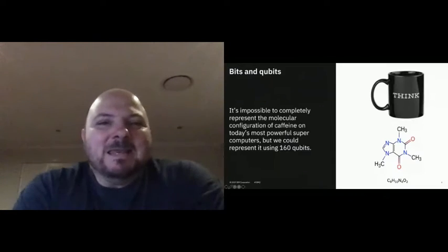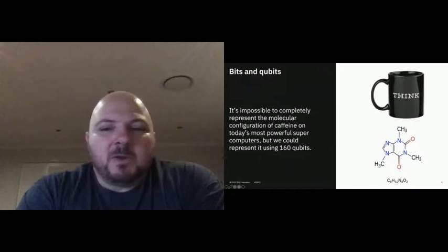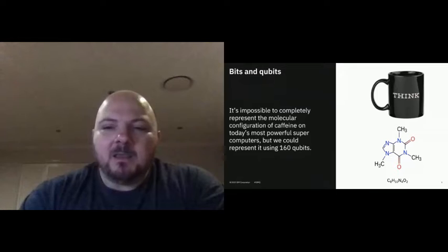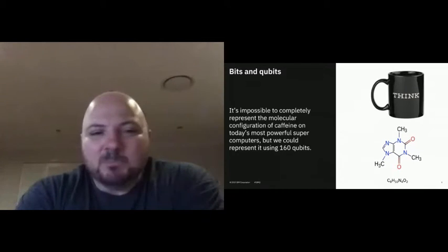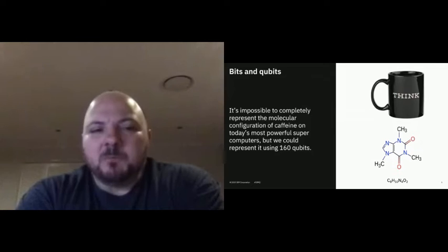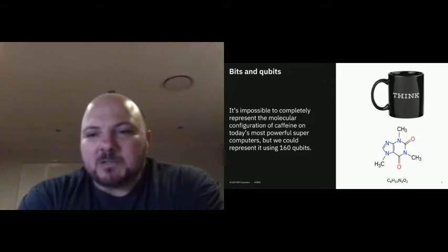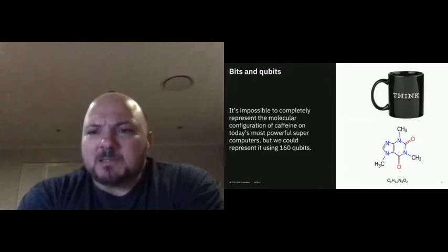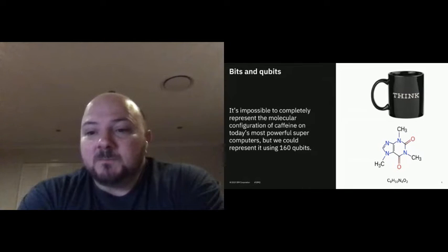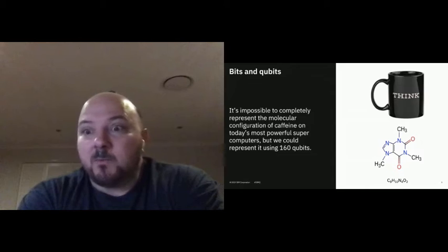Why do we need quantum? What we've got here is the chemical formula for caffeine. It's a relatively simple molecule, but we can't fully model caffeine even on our most powerful supercomputer today. By 'fully model' we mean the interactions of every proton, electron, and neutron to every other proton, electron, and neutron within the molecule. Using a qubit, we think we can model that in 160 qubits, which is imminently doable. We're not there yet, but we're certainly on the way.